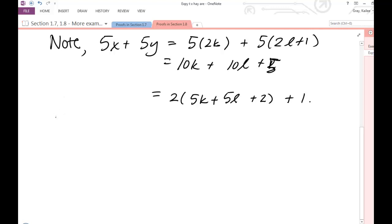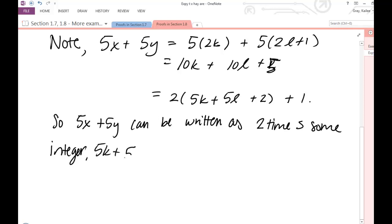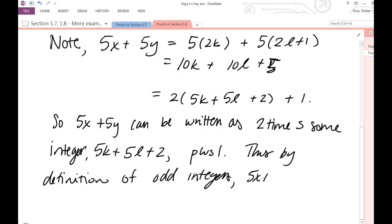So 5x plus 5y can be written as 2 times some integer. Let me go ahead and name it here. 5k plus 5l plus 2 plus 1. Plus, by definition of odd integers, 5x plus 5y is odd. And that's it.